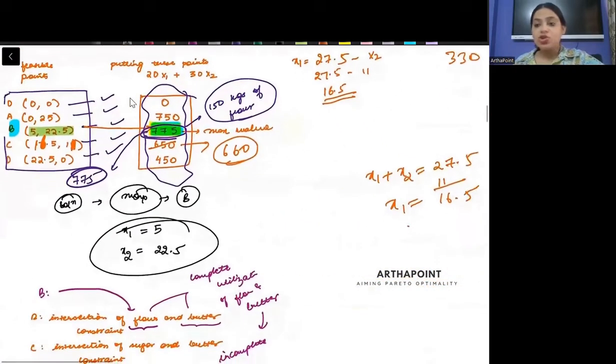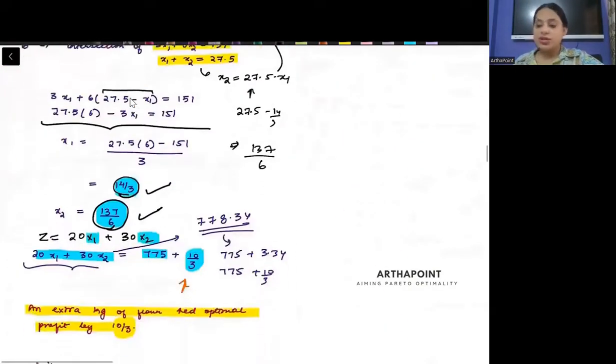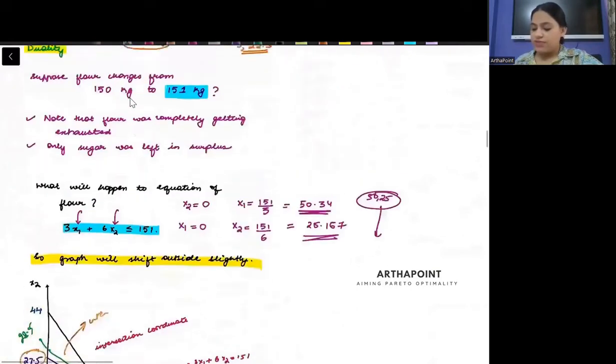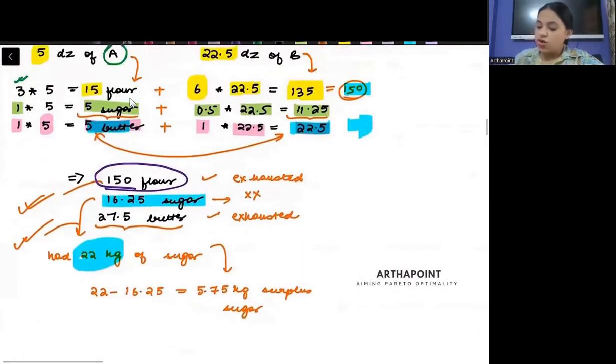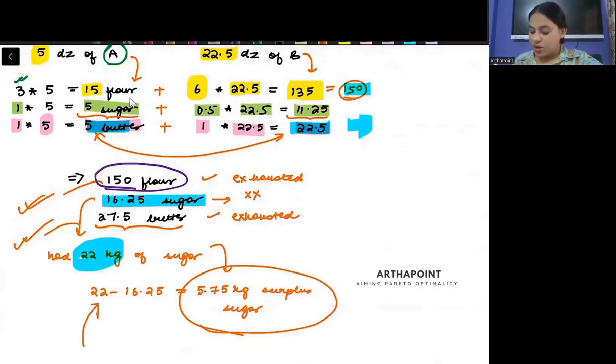Beta, will there be any impact when you change sugar? No. Why? Because sugar was never fully utilized. If you just go back to our previous analysis, in the last class, I showed that sugar was already in surplus. I was never using sugar completely. We had 22 kgs of sugar and in the optimum, we were only using 16.25 kgs of sugar. If we were not using sugar completely, then it means that even if I increase sugar to 23 kgs, it will not change anything. It will not increase my profits.